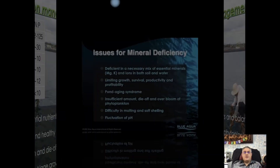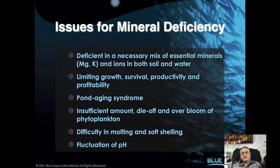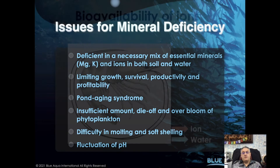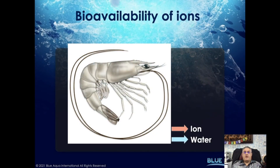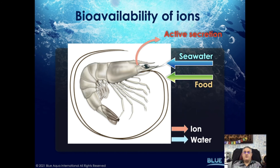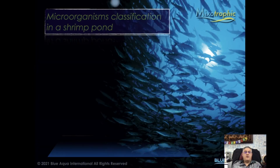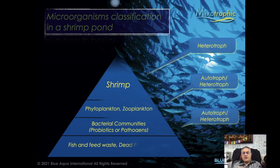Minerals play a very important role in the whole mixotrophic system and shrimp pond. In Asia we apply a lot of magnesium, calcium, and potassium, and their ratio is very important. Bioavailability of iron is also very important — shrimp can consume and utilize these minerals through different pathways.